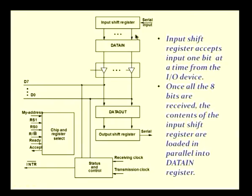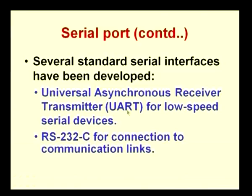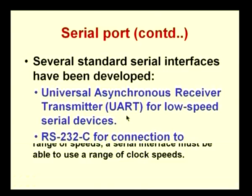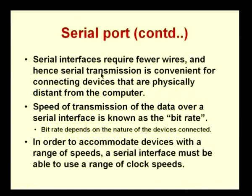For serial input and output, a shift register requires a clock to control the rate at which data is shifted in or out. We have a transmission clock and a receiving clock, which determine how fast data can be serially shifted into or out of the interface. One very common standard serial interface is the RS-232C, also called a Universal Asynchronous Receiver Transmitter or UART, used for many communication links and typically for low-speed serial devices. The basic advantage of serial interfaces is that they require fewer wires — in fact just one wire — making them very convenient for connecting devices that are physically distant from the computer.